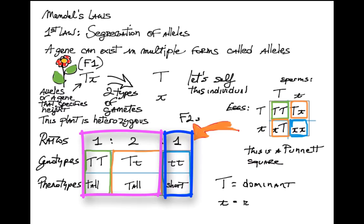You can see that the big T is dominant and the little t is recessive.